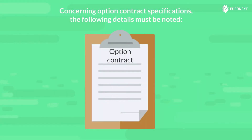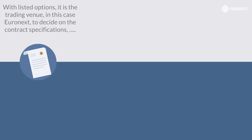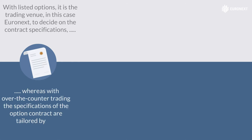Concerning option contract specifications, the following details must be noted. With listed options, it is the trading venue — in this case Euronext — to decide on the contract specifications, whereas with over-the-counter trading, the specifications of the option contract are tailored by the counterparties.